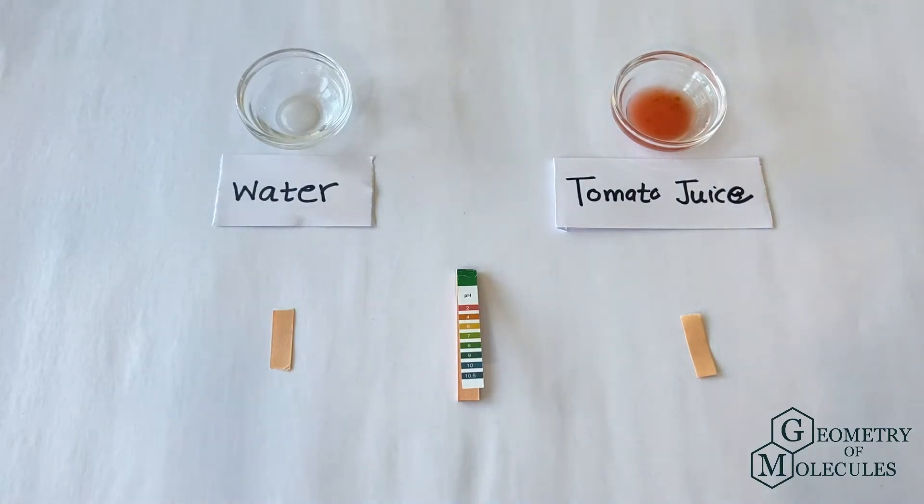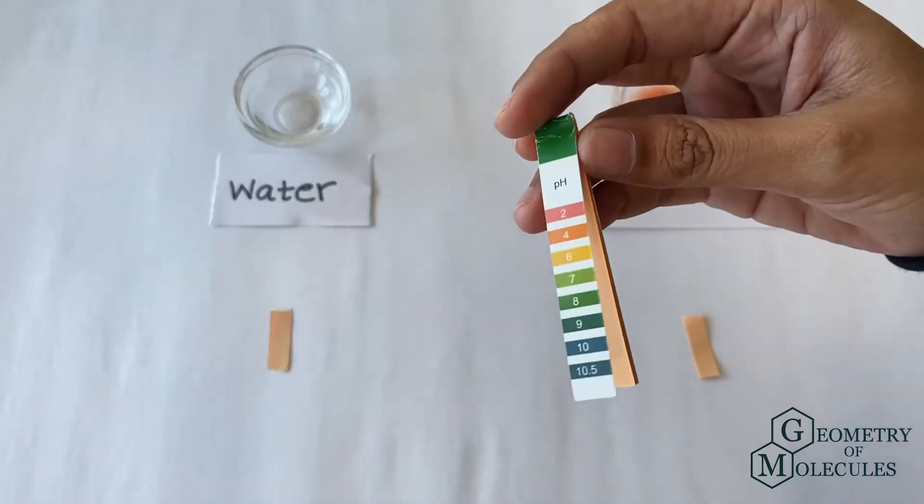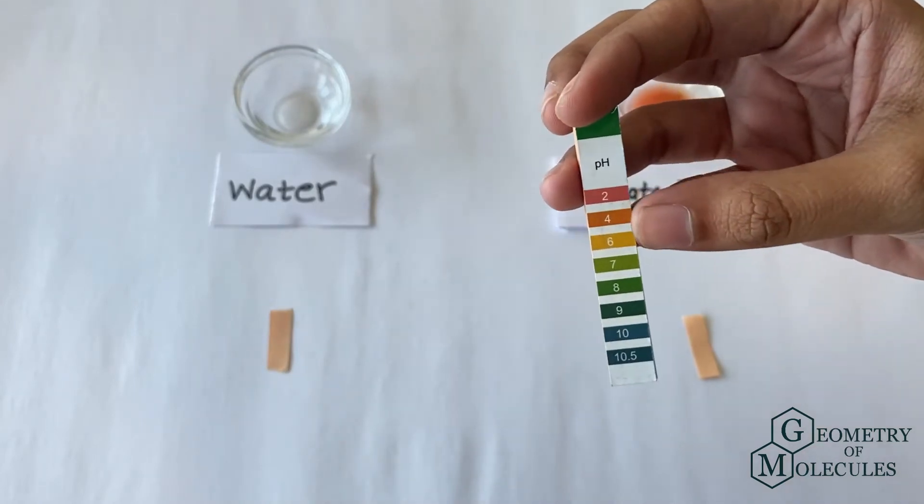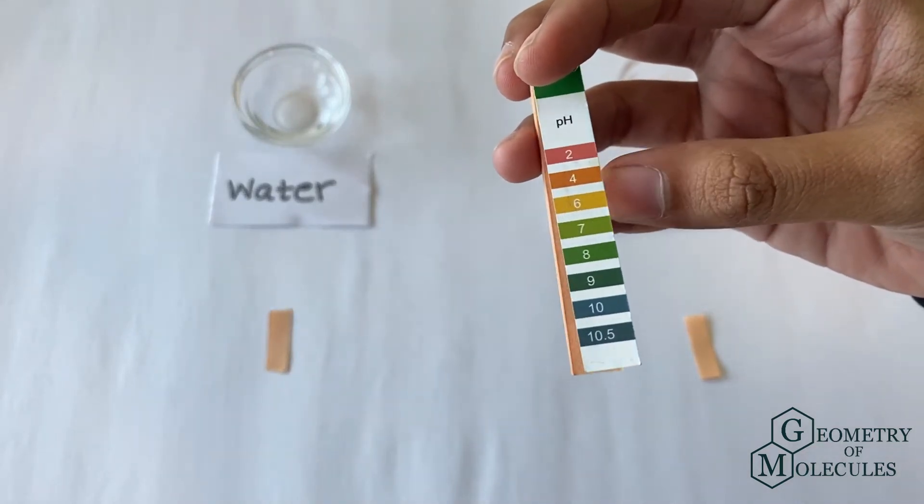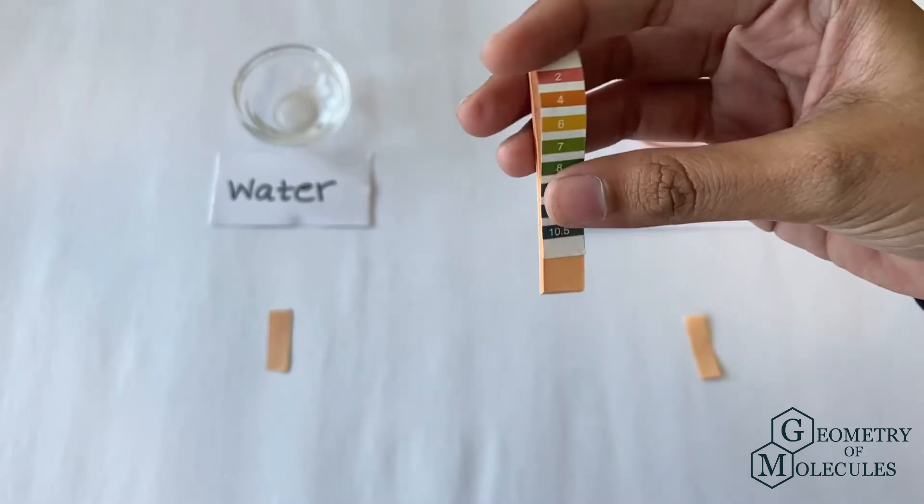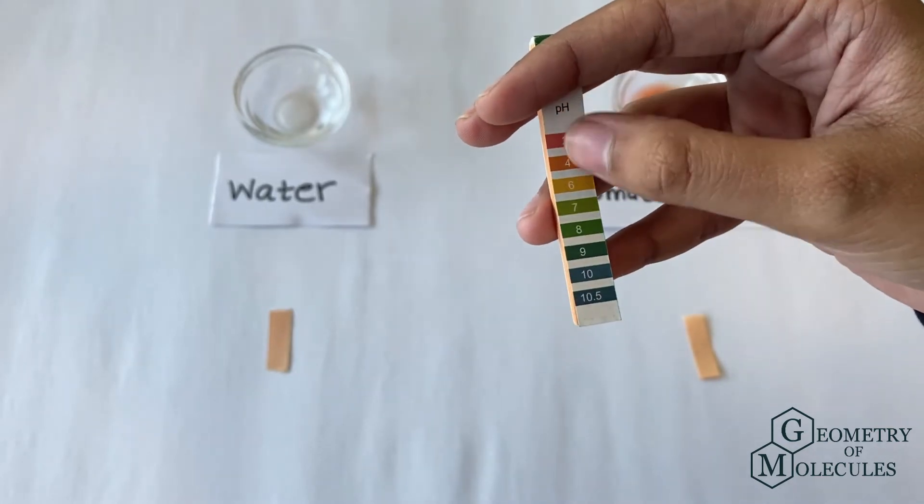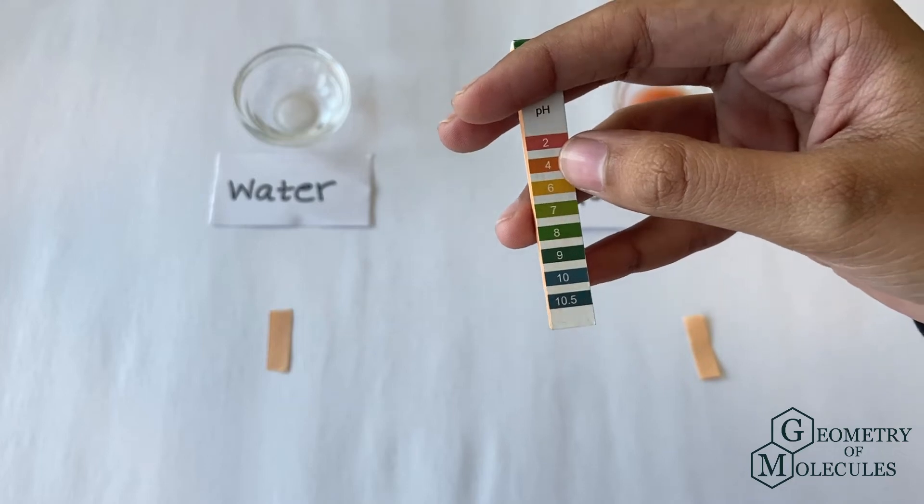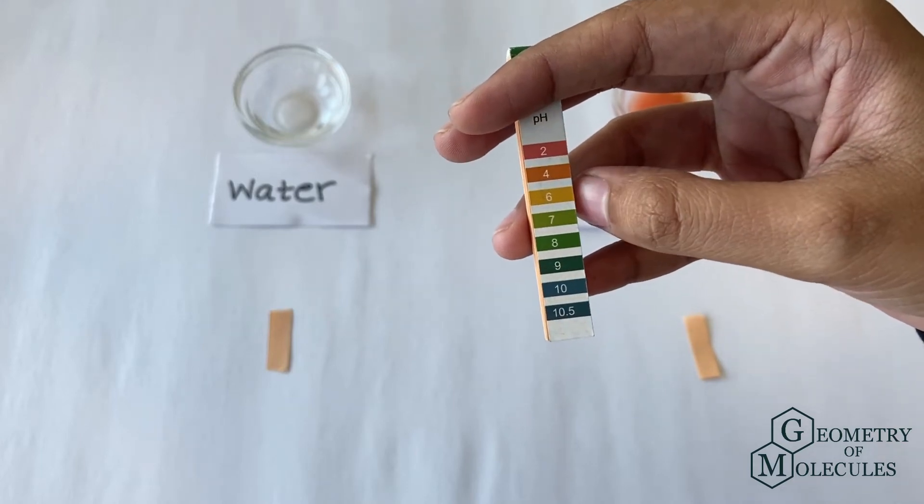This is what a pH strip looks like. Based on the nature of a sample, the strip will change its color. Substances over 7 pH are considered basic, while the ones under 7 are considered acidic. If you get the value of 7, that means the substance is neutral.